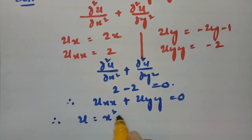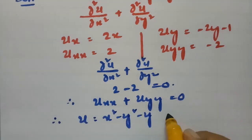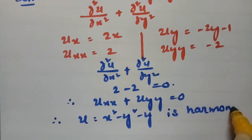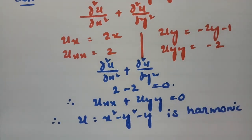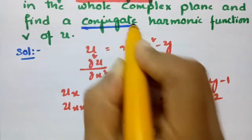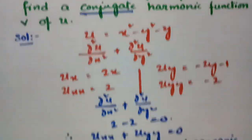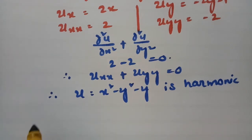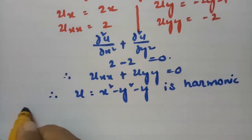Therefore, the given function u = x² - y² - y is harmonic. Now in an easy process, I am going to find out the conjugate harmonic function v of u using the Milne-Thomson method.